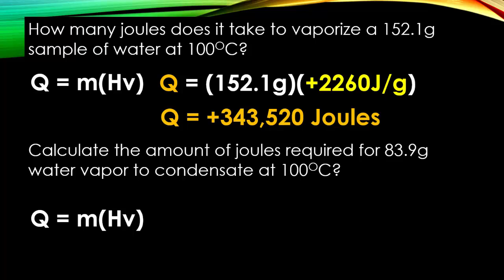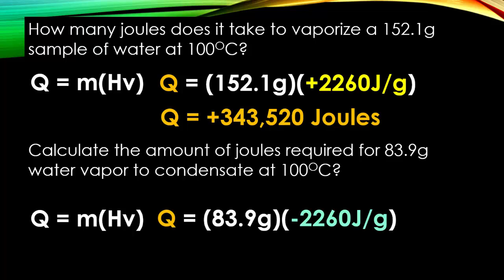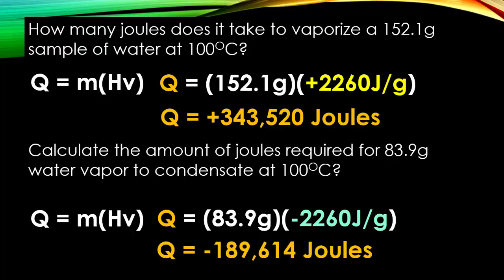Now the reverse: calculate the amount of joules required for 83.9 grams of water vapor to condense at 100 degrees Celsius. Using Q equals m times Hv with a negative Hv value, because we want vapor to turn into a liquid, we do 83.9 times negative 2260, giving us negative 189,614 joules of energy that must be lost for this phase change to occur.